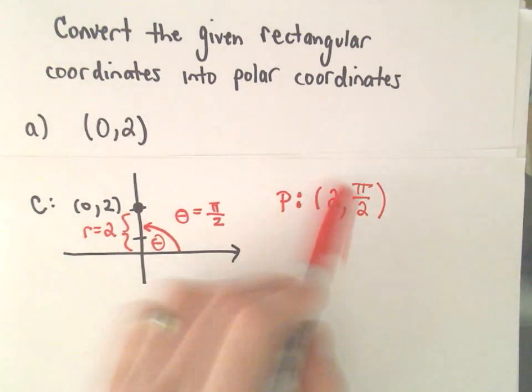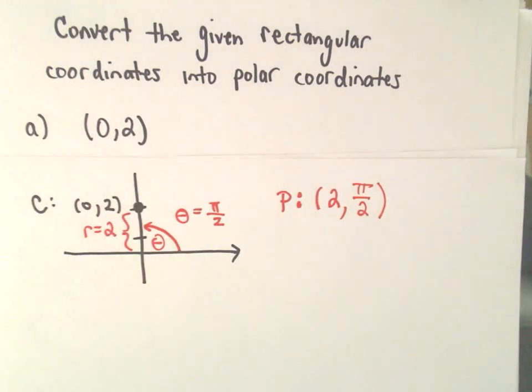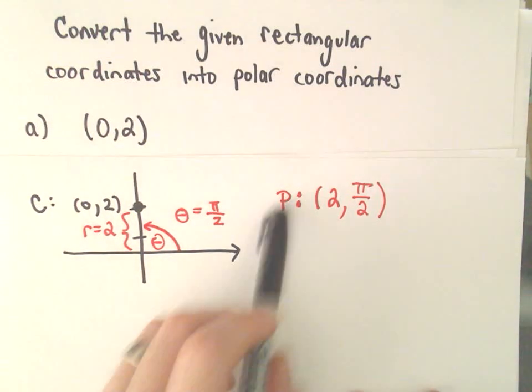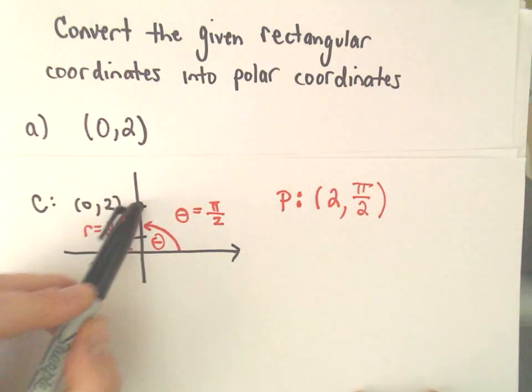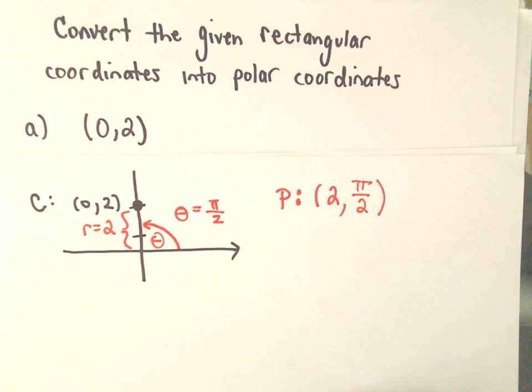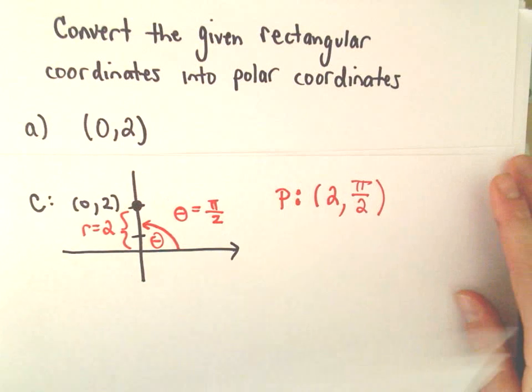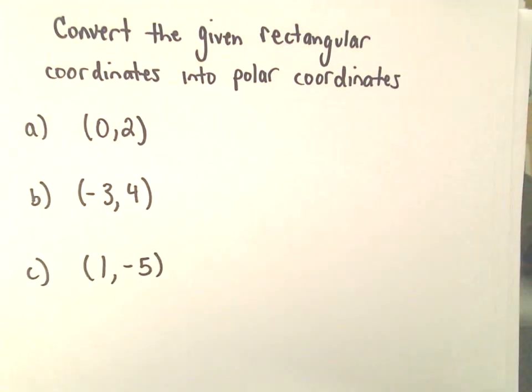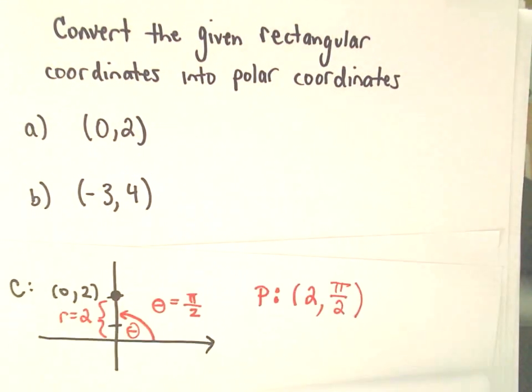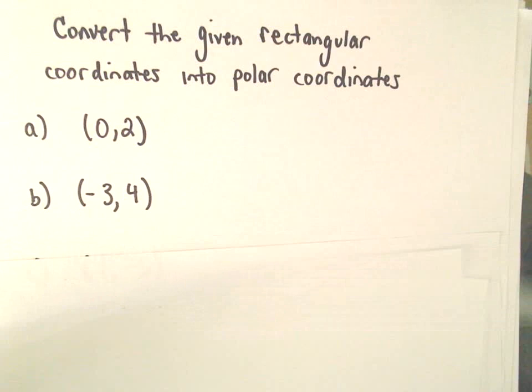Or at least that would be one way of expressing that point. So again, in polar coordinates, there's infinitely many ways to represent a given point. And that one to me at least seems like the most straightforward in this case. Certainly works. Okay, so let's look at Part B here: negative 3, comma 4. We'll do that one as well since Part A wasn't too terrible.